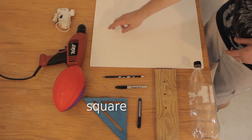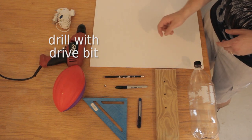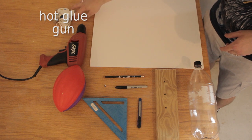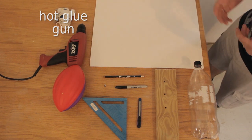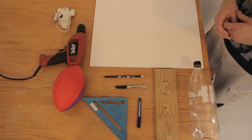A carpenter square, a drill with a screw bit in it, as well as a hot glue gun. With these tools we're going to go ahead and build our water bottle rocket.